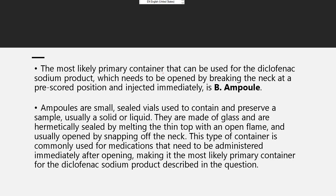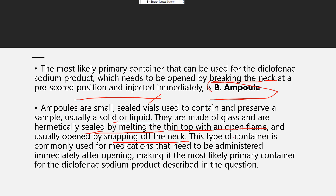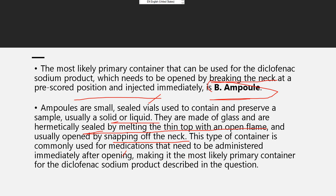The most likely primary container for the diclofenac sodium product is one that needs to be opened by breaking the neck at the pre-scored position and injected immediately: B, ampoule. Ampoules are small, sealed glass containers used to contain and preserve samples, usually liquid. They are hermetically sealed by melting the thin top with an open flame, and are usually opened by snapping off the neck. This type of container is commonly used for medications to be administered immediately after opening, making it the most likely primary container for this diclofenac sodium product.